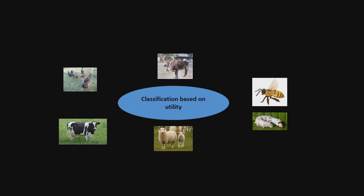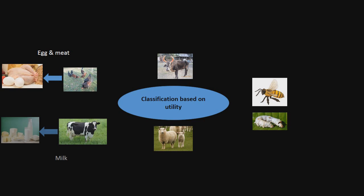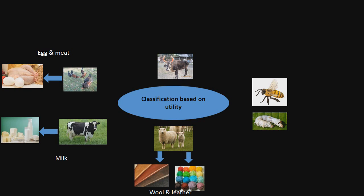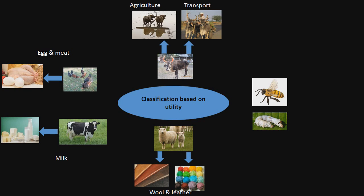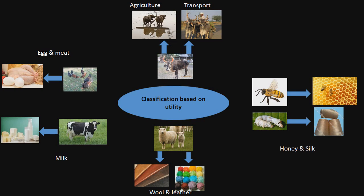Based on their utility, domesticated animals can be classified as: egg and meat yielding animals, milk producing animals, wool and leather producing animals, animals used in agriculture and transport, and honey and silk producing animals.